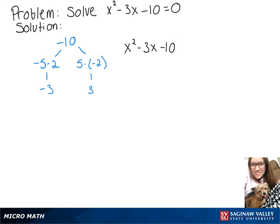So we can rewrite our equation as (x - 5)(x + 2), and then we can write that (x - 5)(x + 2) = 0.